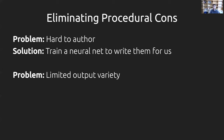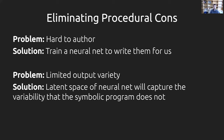Each procedural model will capture some subset of chairs, and the union of all possible procedural models the neural network can generate will capture all the chairs in the world. This directly addresses the second problem: if the output variety of a single procedural model is limited, the latent space of the neural net will capture the variability that each symbolic program does not. Some variability will be captured by the symbols of the program, and the rest will live in the neural net's latent space.